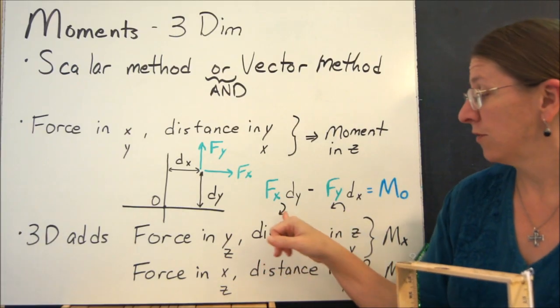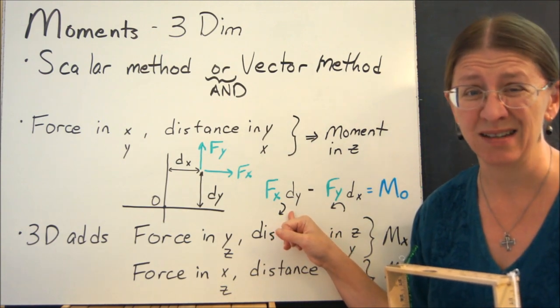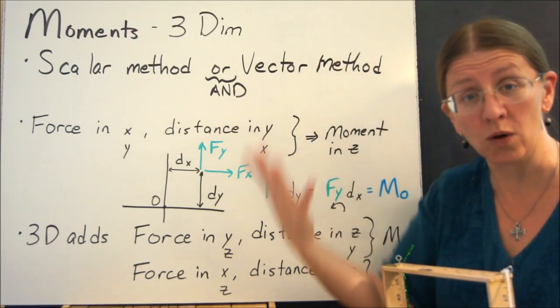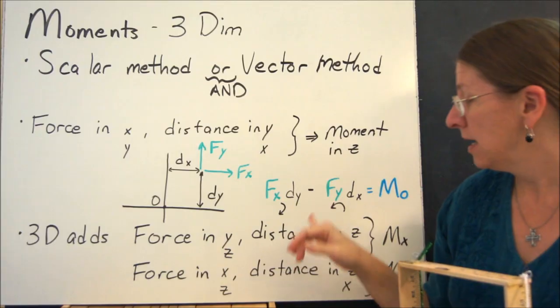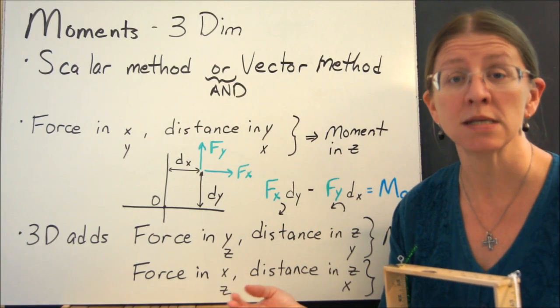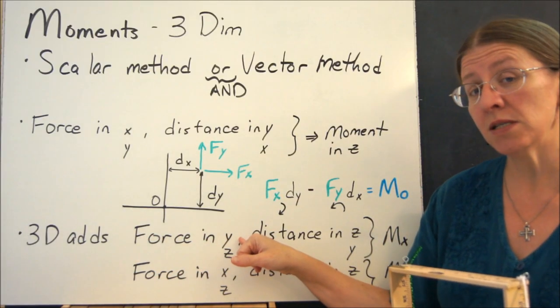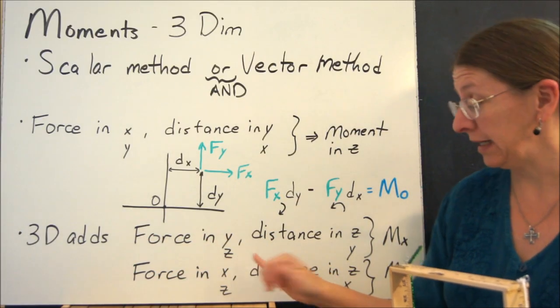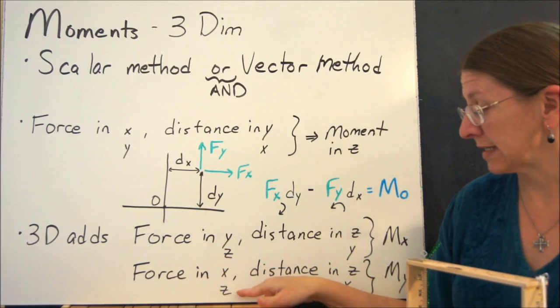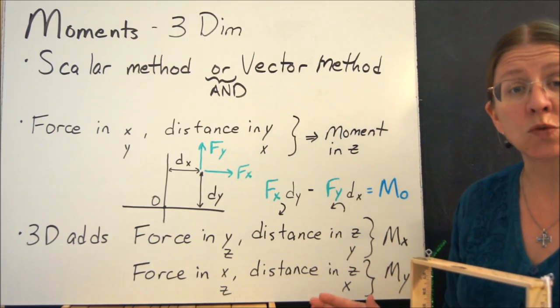In three dimensions, first of all, you can't use these little squiggly arrows because it doesn't make any sense. In three dimensions, which way is the clock facing? Is it on this wall or the ceiling? It just doesn't make sense. So we will use primarily Cartesian components for three-dimensional moments. We can now have forces in y and z giving us moments in x, or forces in x and z with distances in z and x to give us moments in y.